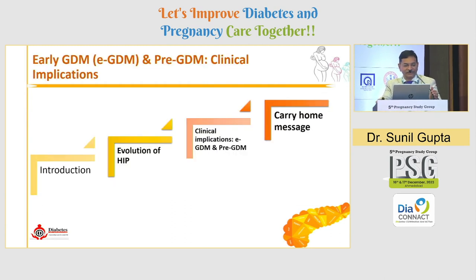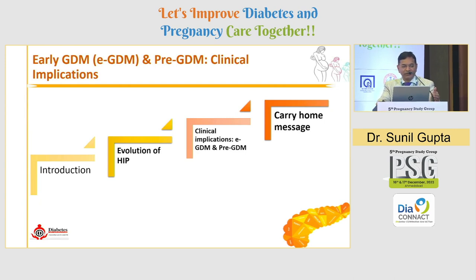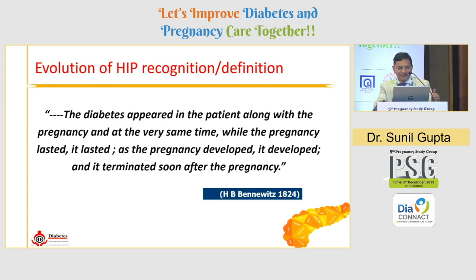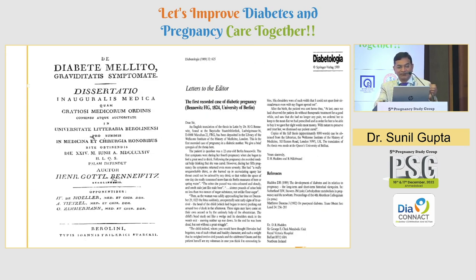There is no conflict of interest for this particular talk. We will have an introduction, evolution of hyperglycemia in pregnancy — how it evolved from the traditional pregnancy diabetes to GDM, and then talk about EGDM and the clinical implication and carry-home message. Diabetes appeared in the patient along with the pregnancy, lasted as the pregnancy developed, and terminated soon after. This is possibly the first mention in 1824 — almost 200 years ago — where pregnancy diabetes or GDM was indirectly recognized.